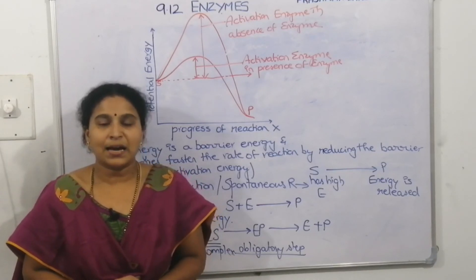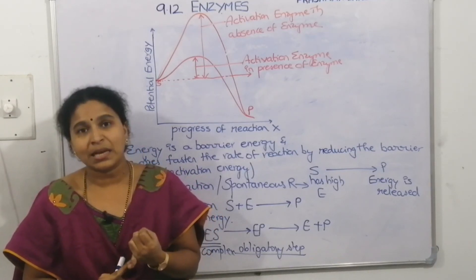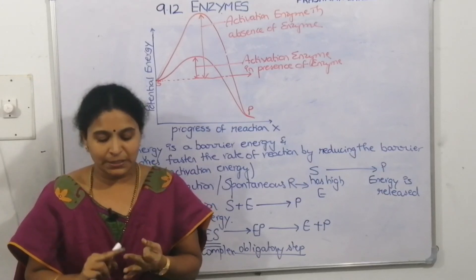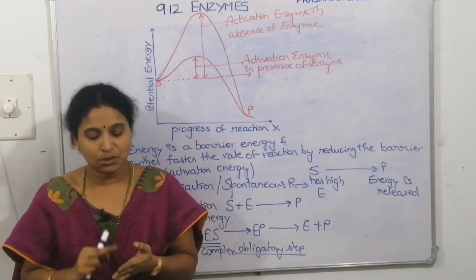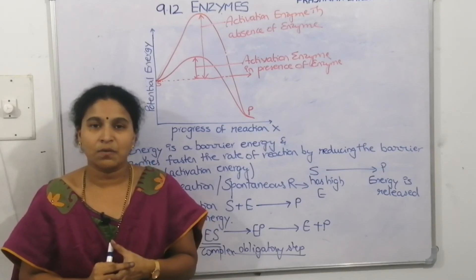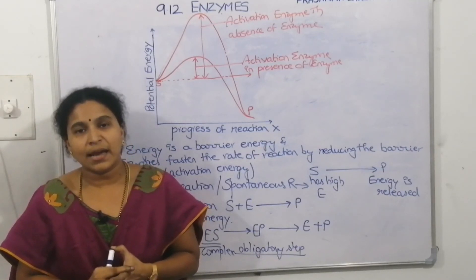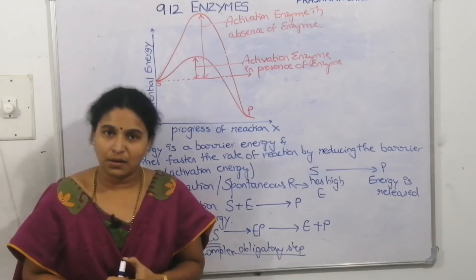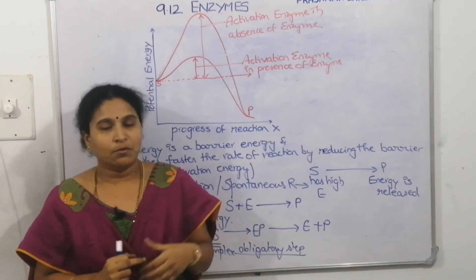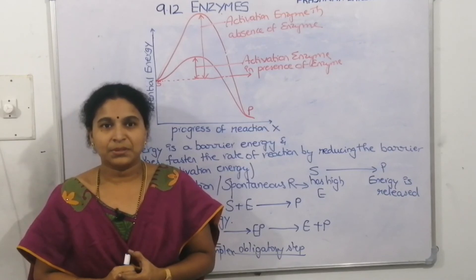To summarize today's lecture: we discussed who coined the term enzyme, the chemical nature of enzymes, physical versus chemical reactions, turnover value, which enzyme has the highest turnover value (carbonic anhydrase), and what exergonic and endergonic reactions are. Hope you understood the lecture. If you did, please like, share, and subscribe. Thank you.